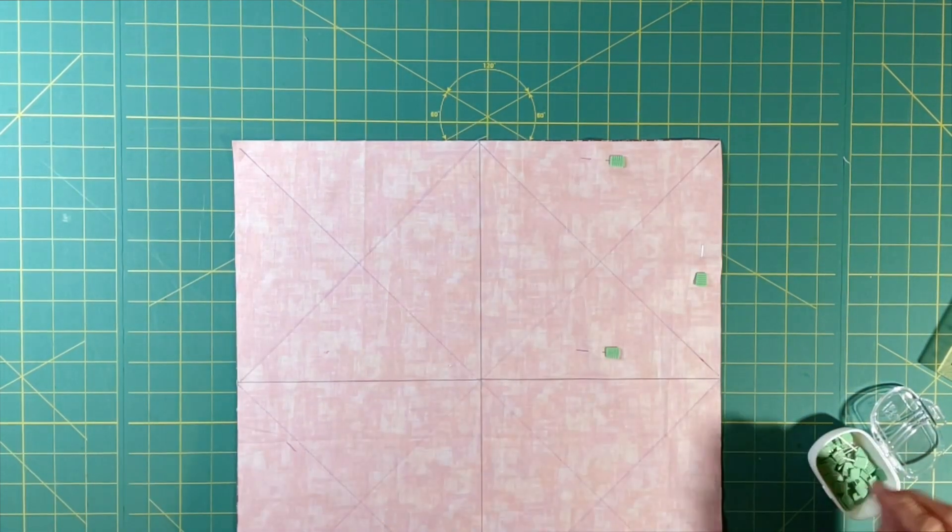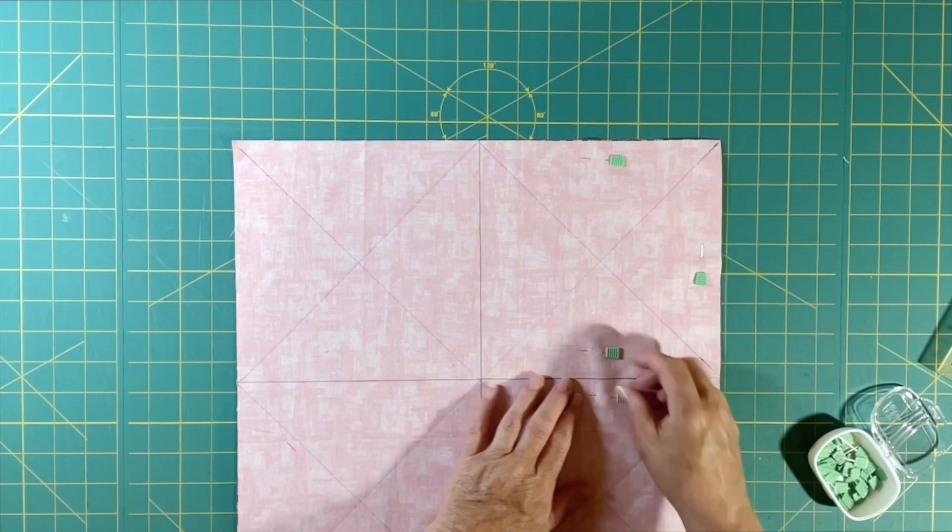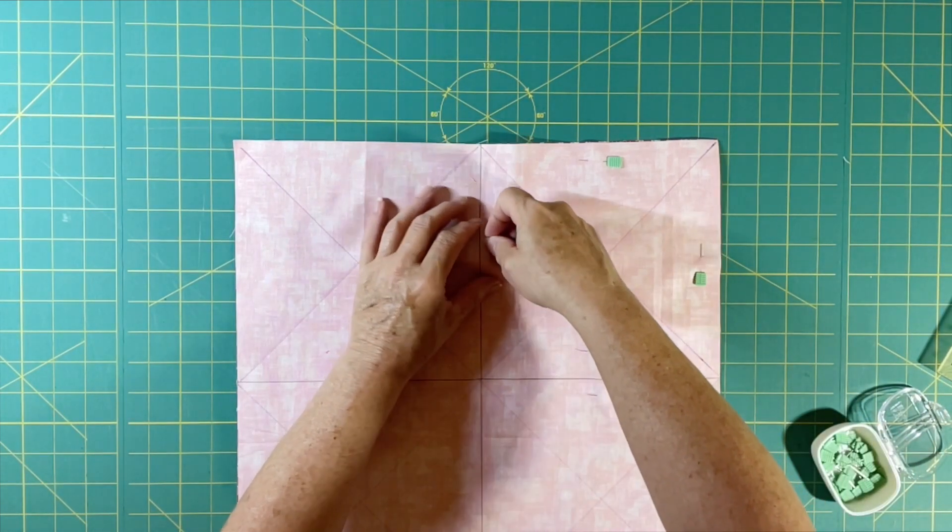So you can put those pins right up next to those lines and it's not going to interfere with any of your sewing.